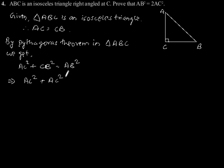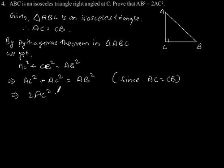This implies AC squared plus AC squared equals AB squared. Since AC equals CB, which implies 2AC squared equals AB squared, as proved.